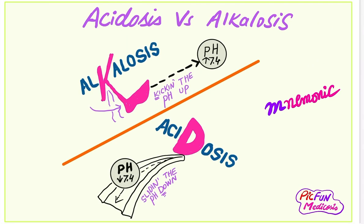Another confusing point is the pH level in alkalosis and acidosis. In alkalosis, pH is greater than 7.4, and in acidosis, pH is less than 7.4. This can be easily remembered by this mnemonic: in the word 'alkalosis' there is the letter K — K for kicking — kicking the pH up. So in alkalosis, pH is greater than 7.4.